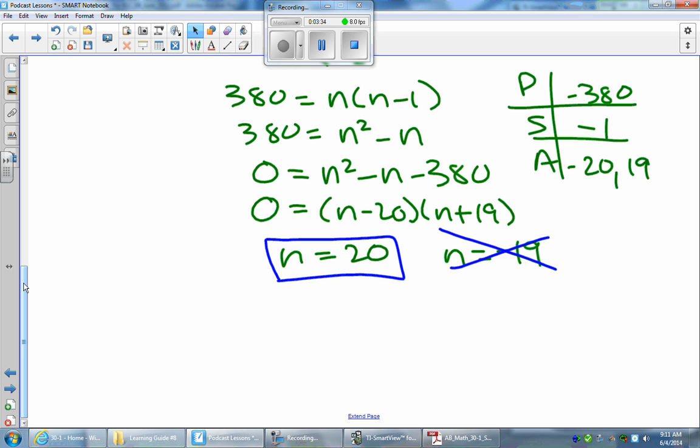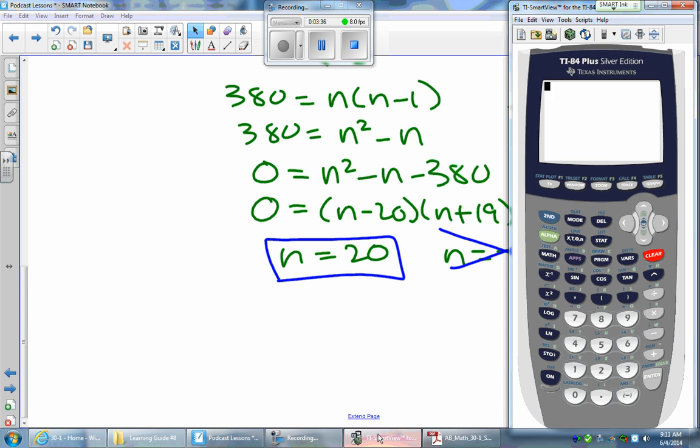Now, you can actually check your answer in case you're unsure if you got it. You could go 20 math, choose 2, and you should get 190 combinations if you did the math right. And if you did the math right, you should get 190, which is what was the answer to begin with.